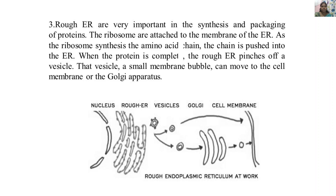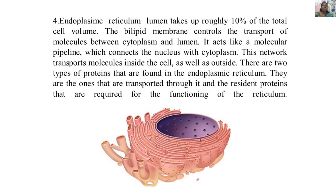The vesicle can pass through the Golgi bodies, which carry it further until it reaches the cell membrane. The endoplasmic reticulum lumen takes up roughly 10 percent of the total cell volume. The bilipid membrane controls the transport of molecules between the cytoplasm and lumen, and it acts like a molecular pipeline connecting the nucleus with the cytoplasm, transporting molecules both inside and outside the cell.